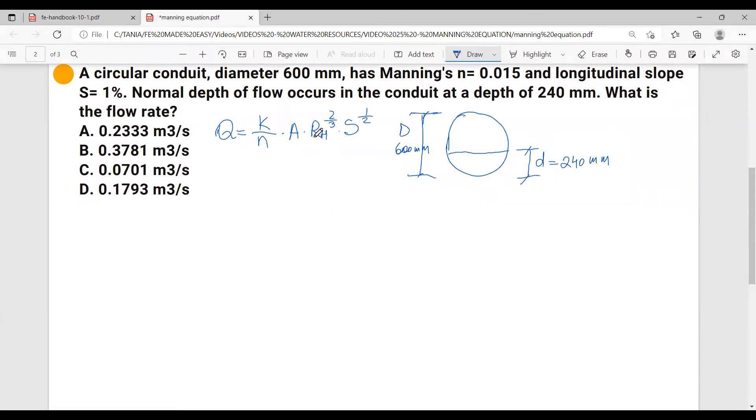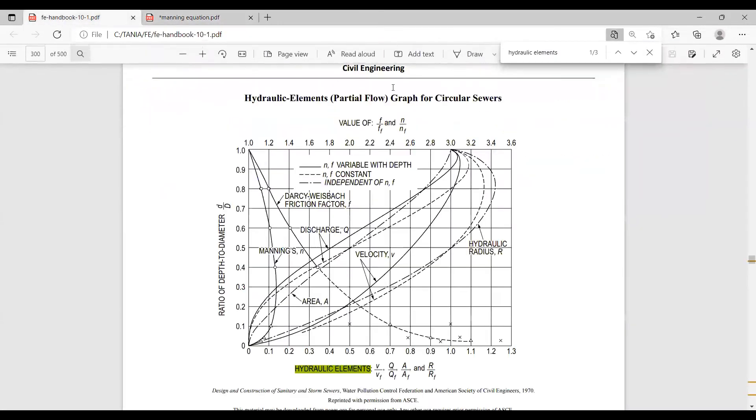Now in order for us to calculate the area of flow and the hydraulic radius, we will have to look into the hydraulic elements graph for circular sewers. If you go to the handbook and you just type hydraulic elements, it will redirect you to this table. This table provides us a few values for area of flow, hydraulic radius given this ratio depth to diameter.